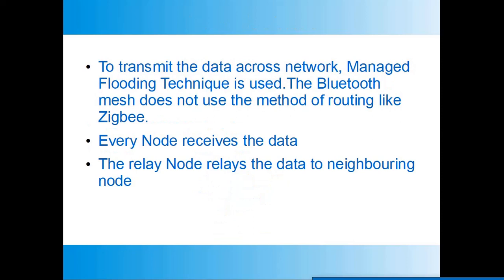To transmit data across the network, a technique called managed flooding is used. Bluetooth mesh does not use routing the way ZigBee does. Since the advertisement is broadcast, every node receives the message, and relay nodes retransmit the data to neighboring nodes — that is how the message travels across the network.